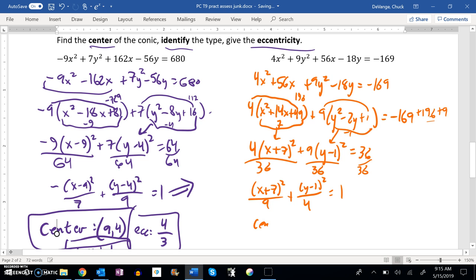So, I know my center. I can read it right off of there. Negative 7, 1.